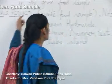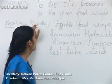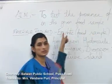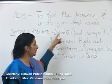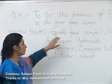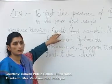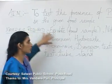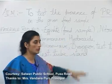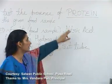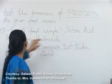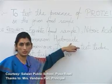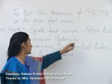The aim of our experiment is to test the presence of proteins in the given food sample. The food sample we have taken is egg white. The materials required are egg white, nitric acid, and ammonium hydroxide — these are the chemicals required.